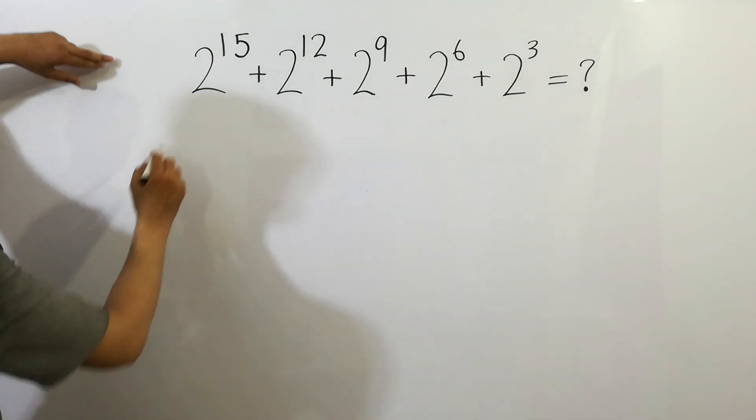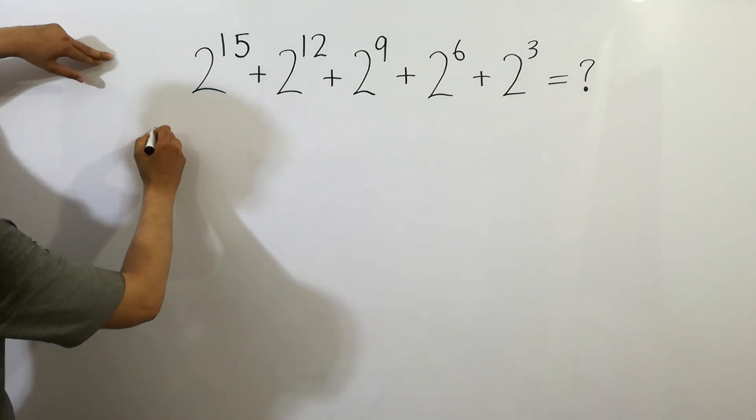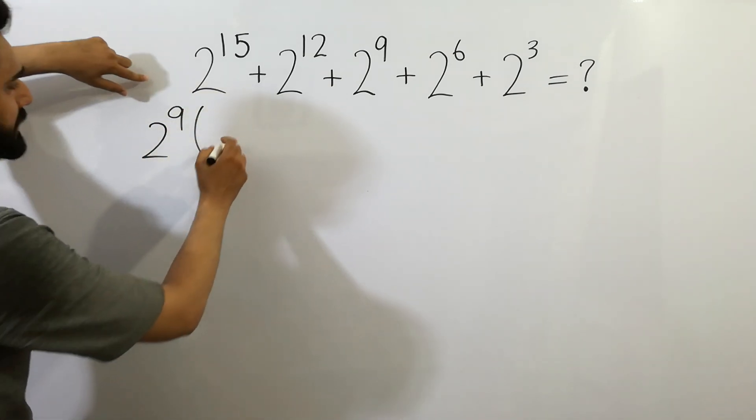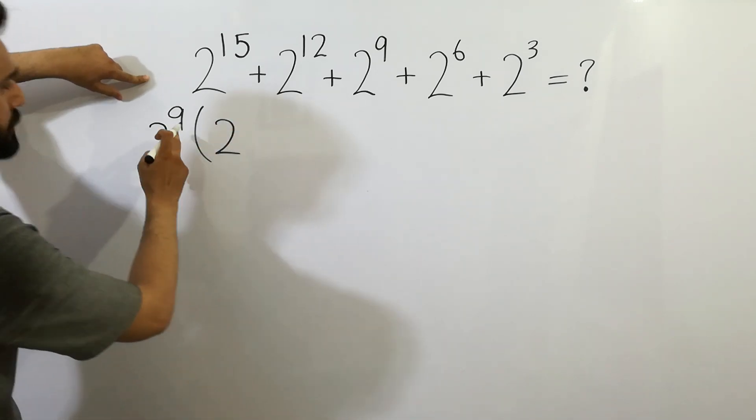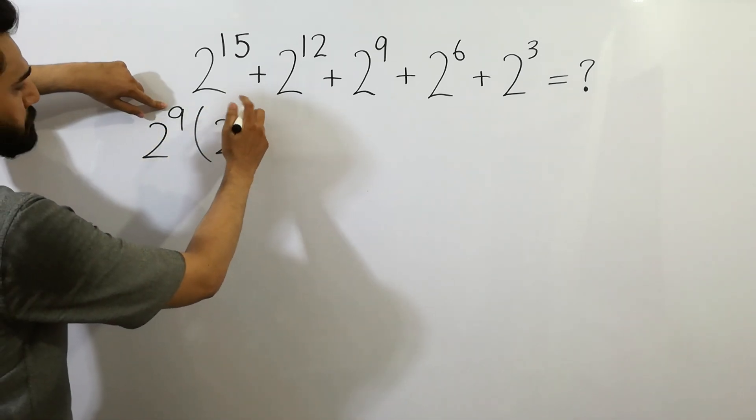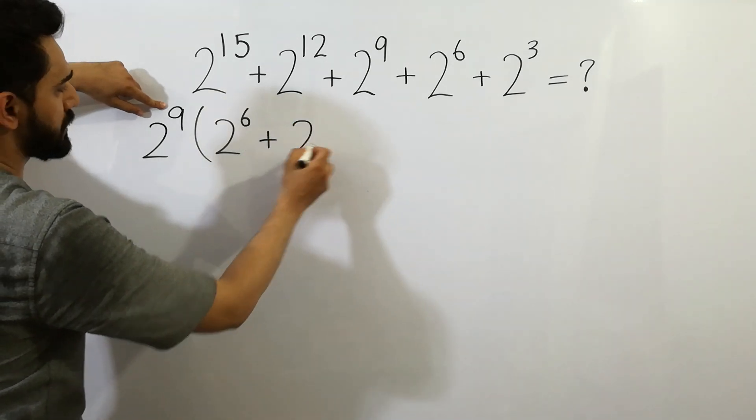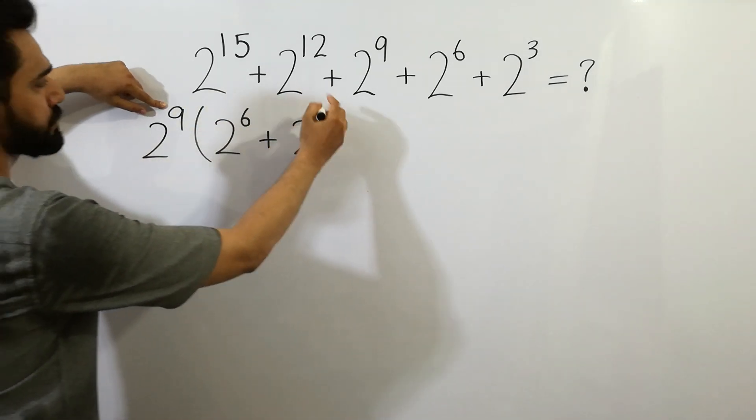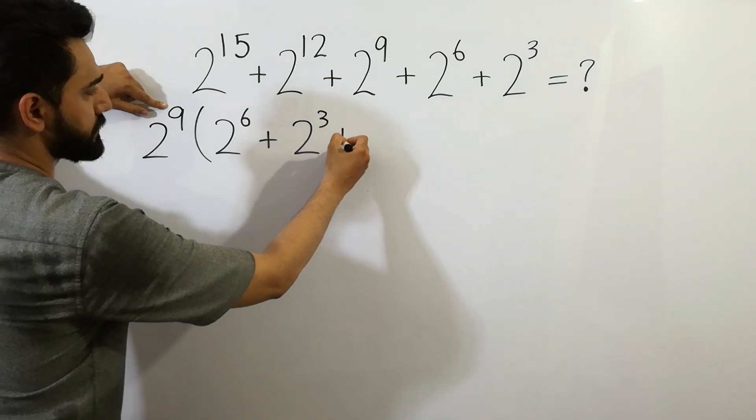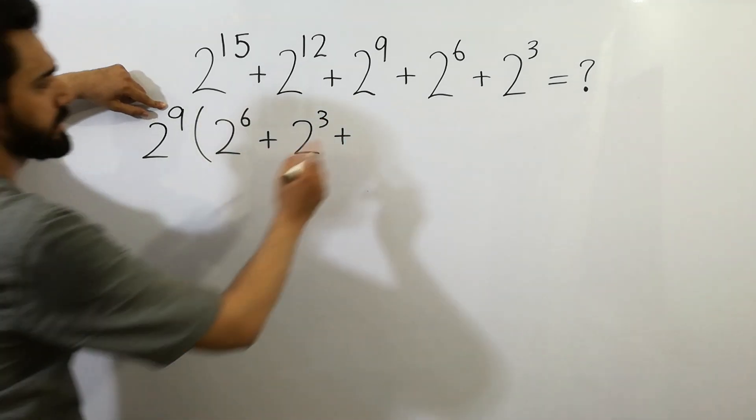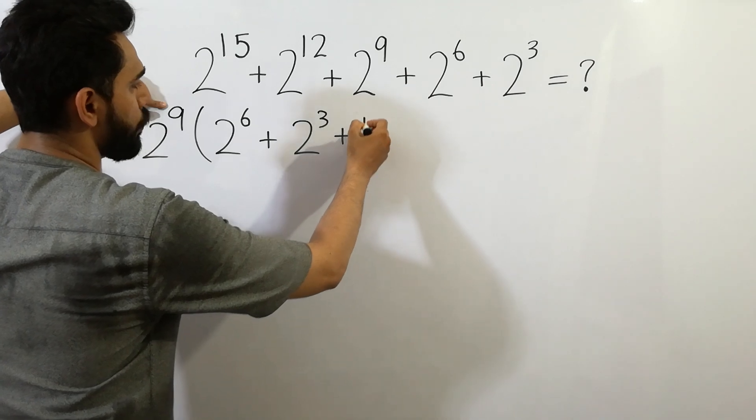We can factor out 2 to the power 9. We will get 2 to the power 9+6 (that's 15), plus 2 to the power 9+3 (that's 12), plus... and next we write here 1.